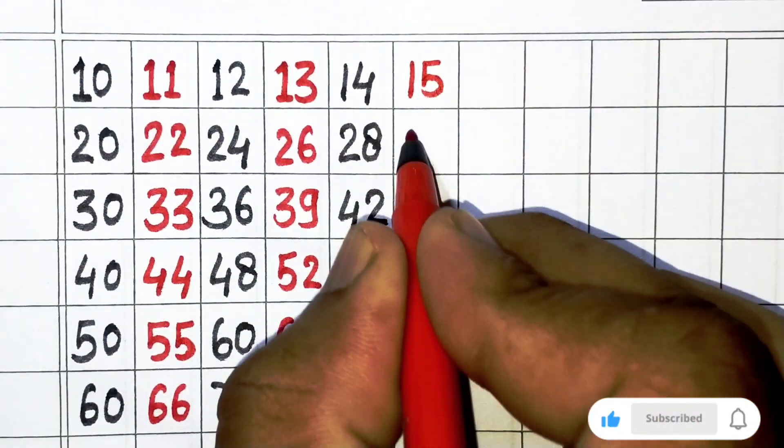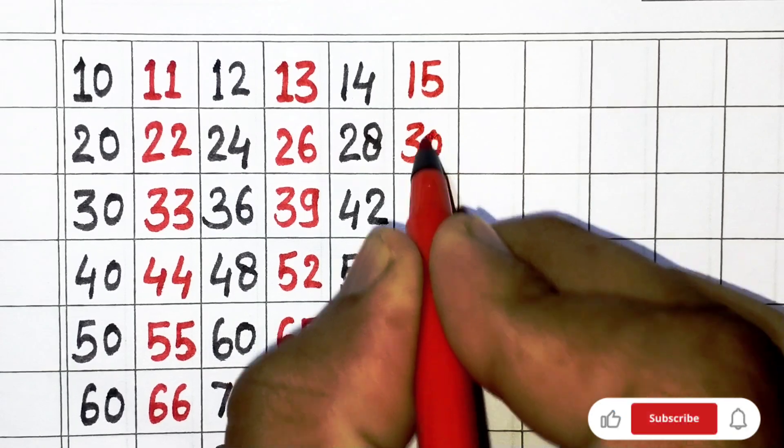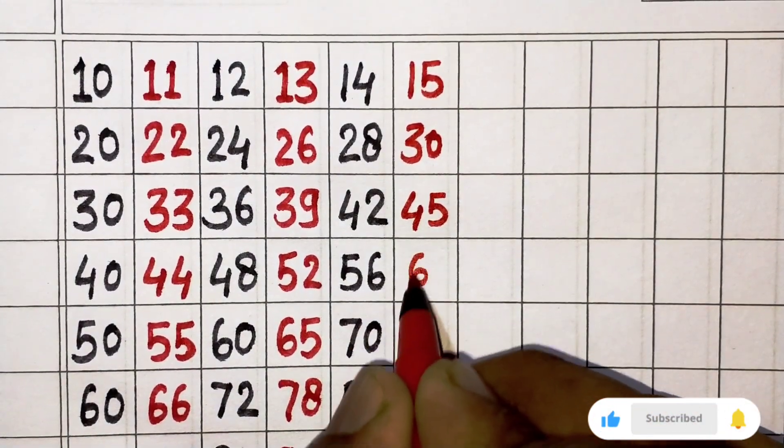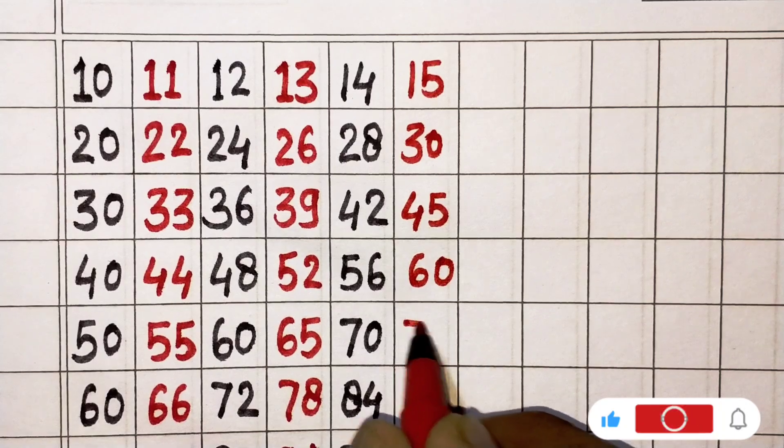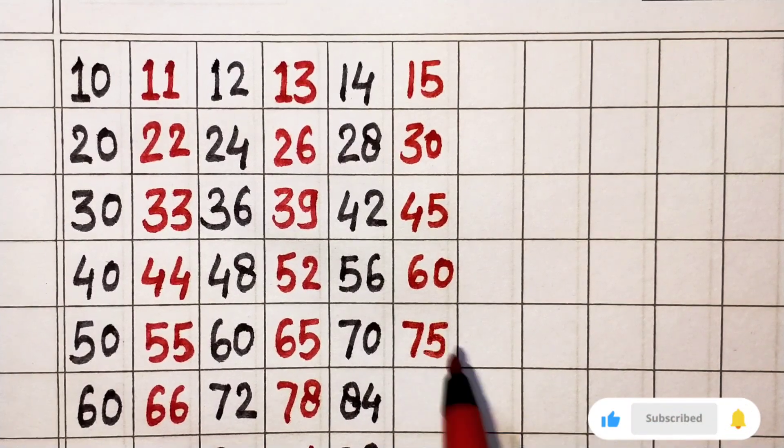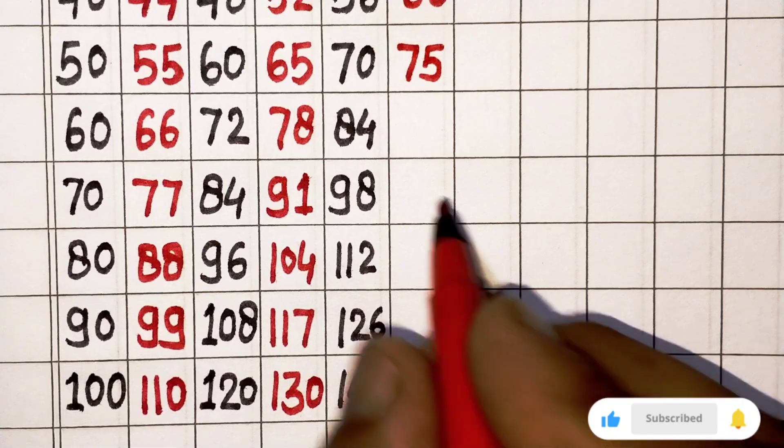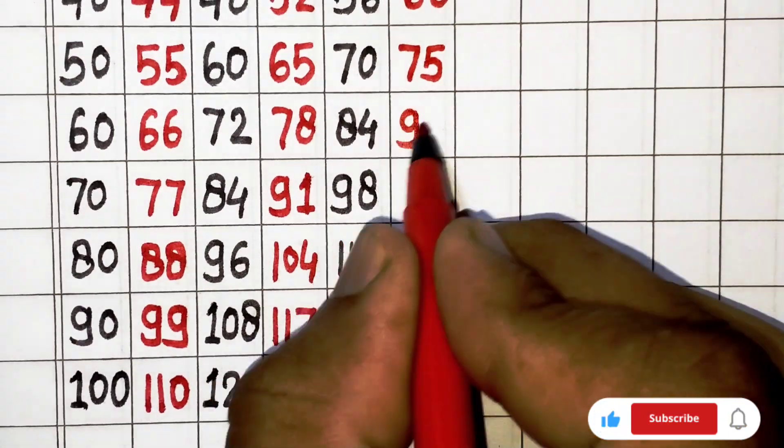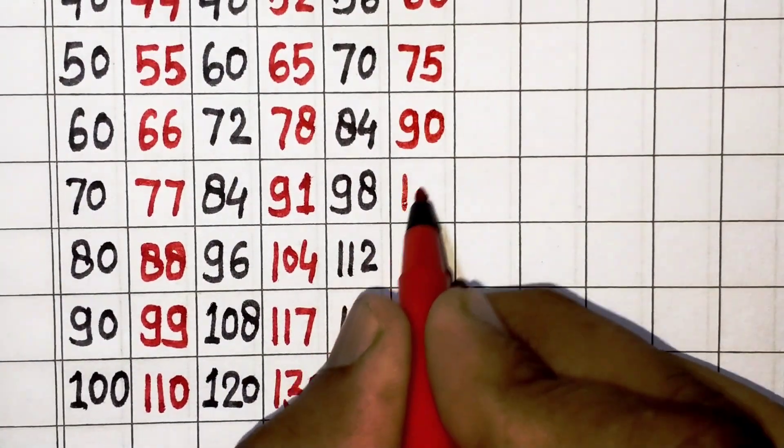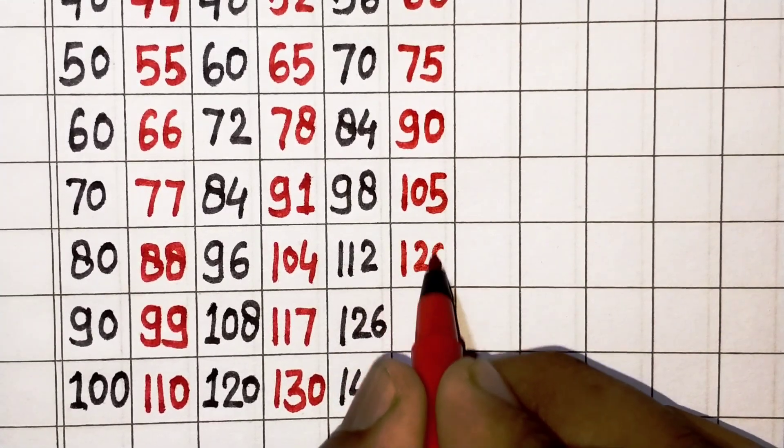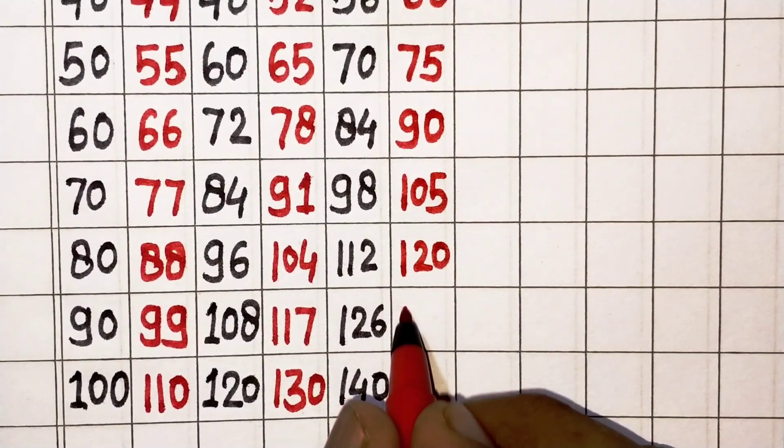15 ones are 15, 15 twos are 30, 15 threes are 45, 15 fours are 60, 15 fives are 75, 15 sixes are 90, 15 sevens are 105, 15 eights are 120, 15 nines are 135, 15 tens are 150.